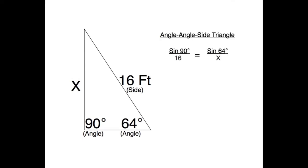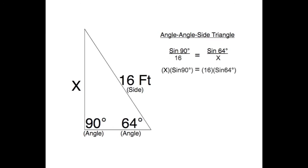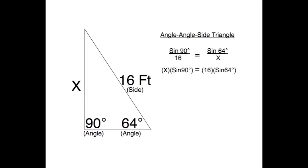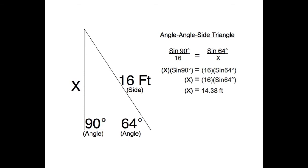Using the Law of Sines formula, I knew that the sine of 90 degrees over 16 feet equals the sine of 64 degrees over x, or the height of my iPad. After cross-multiplying, we can see that x times the sine of 90 degrees equals 16 times the sine of 64 degrees. Because the sine of 90 degrees equals 1, we can drop that part to leave us with x equals 16 times the sine of 64 degrees, which is 14.38 feet, or roughly 14 feet 5 inches.